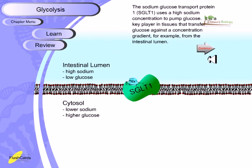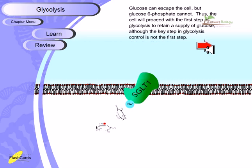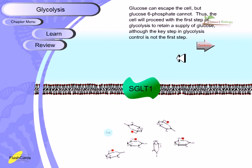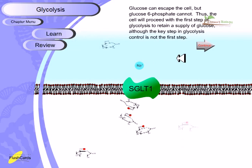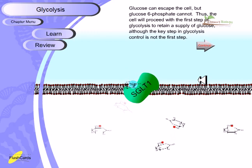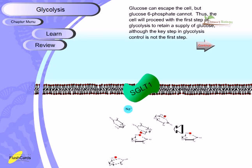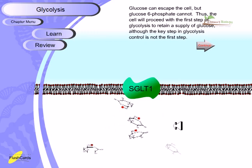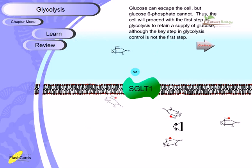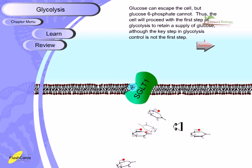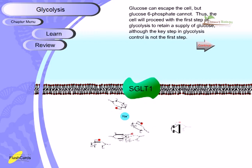From the intestinal lumen, glucose can be extracted into cells this way. An important point: glucose can escape the cell, but glucose-6-phosphate cannot. Once glucose is converted to glucose-6-phosphate, it cannot be transported by any glucose transporter. So once glucose-6-phosphate is made, glucose must remain inside the cell and proceed through glycolysis and the Krebs cycle, due to the attachment of the phosphate at the sixth position.